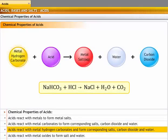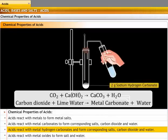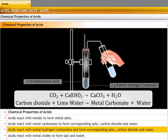Acids react with metal hydrogen carbonates and form corresponding salts, carbon dioxide, and water. Take 2 grams of sodium hydrogen carbonate in a test tube. Pour 2 ml of hydrochloric acid into the test tube. You will see that a gas evolves. Pass this gas through freshly prepared lime water. The lime water turns milky, indicating that the gas evolved is carbon dioxide. A white precipitate of calcium carbonate is also formed.